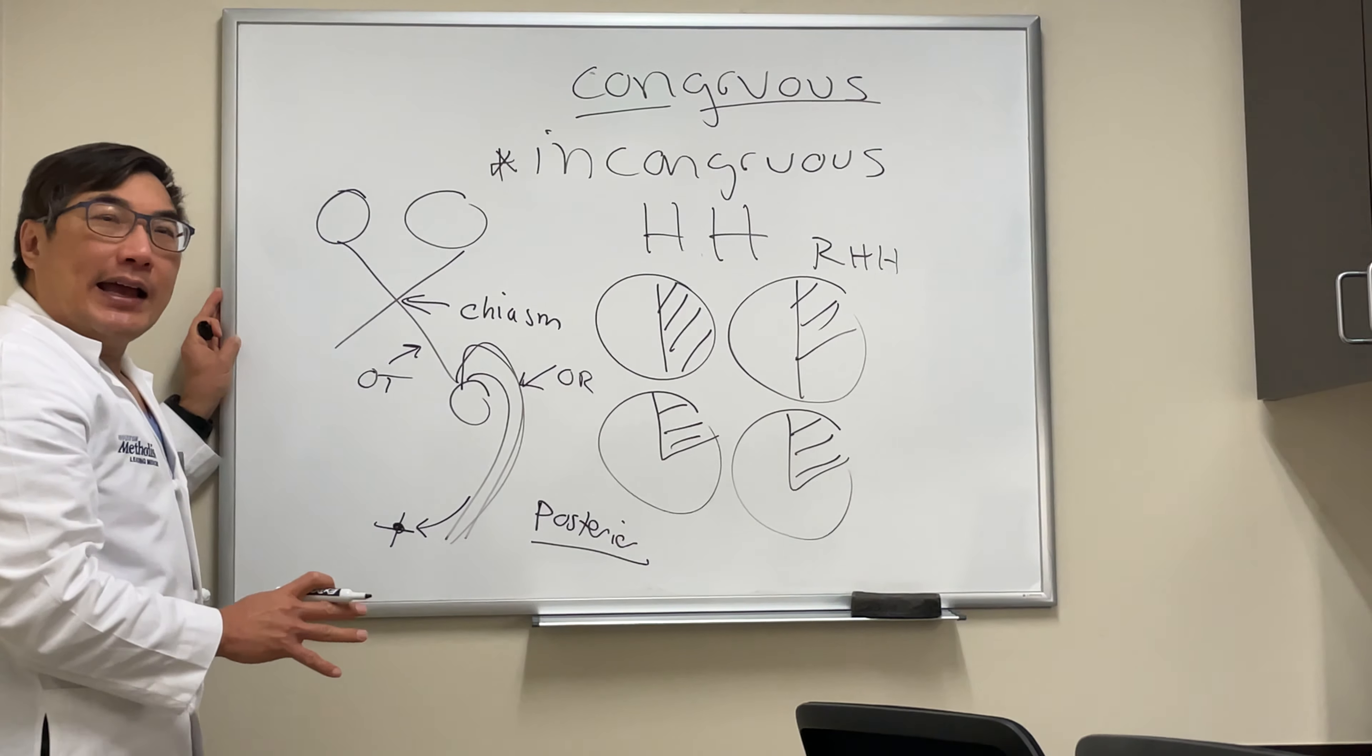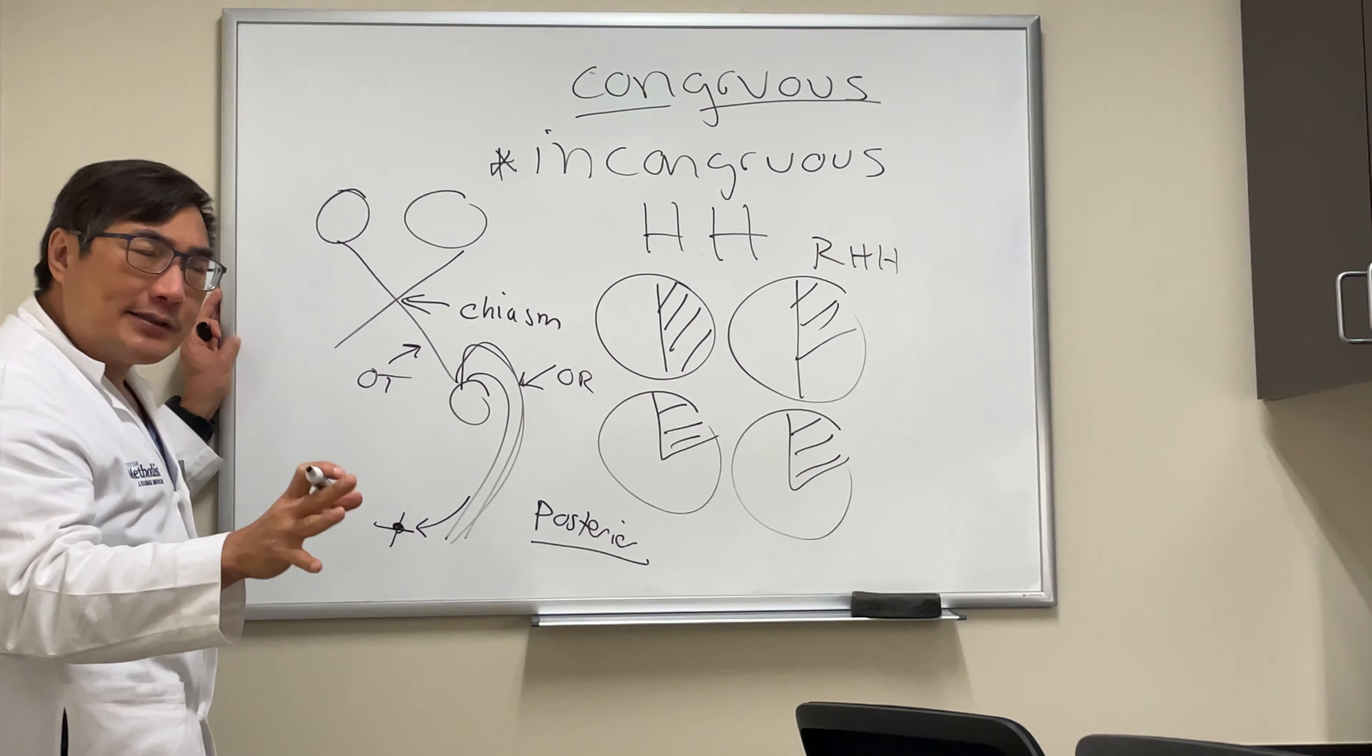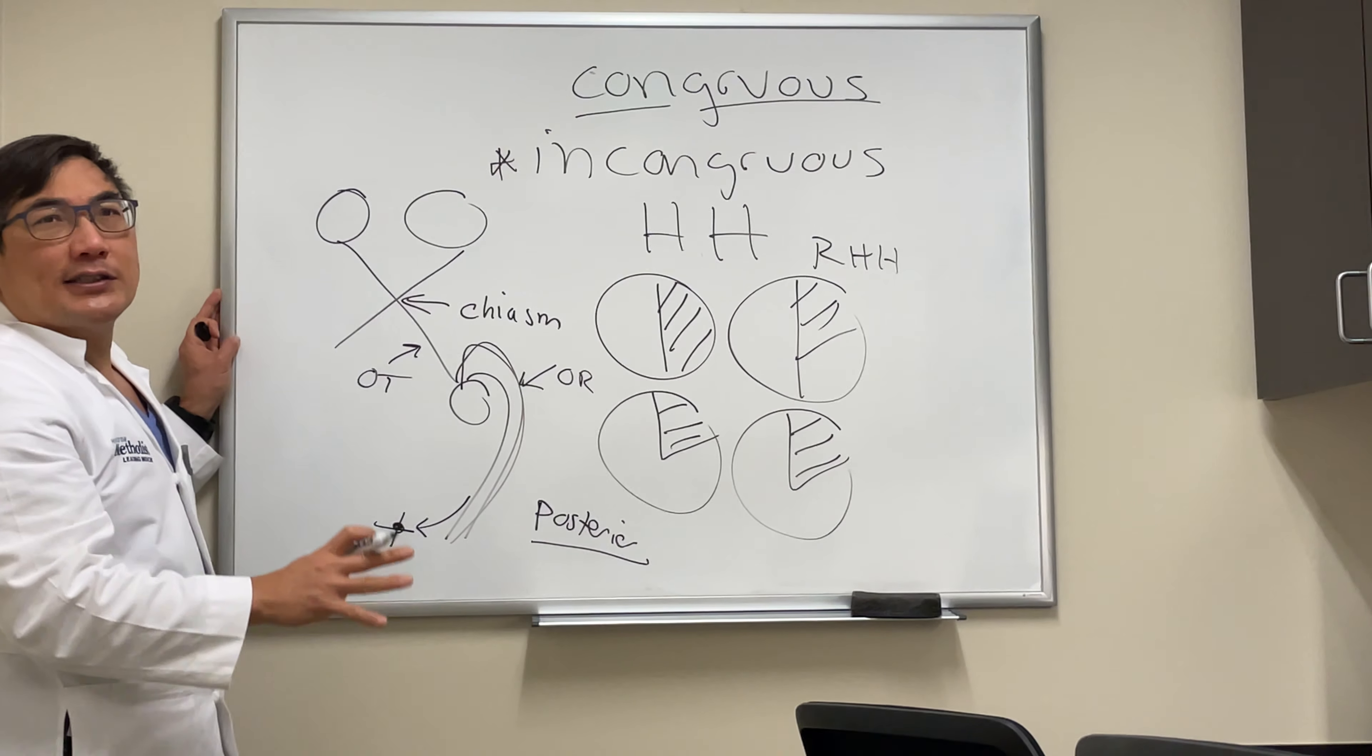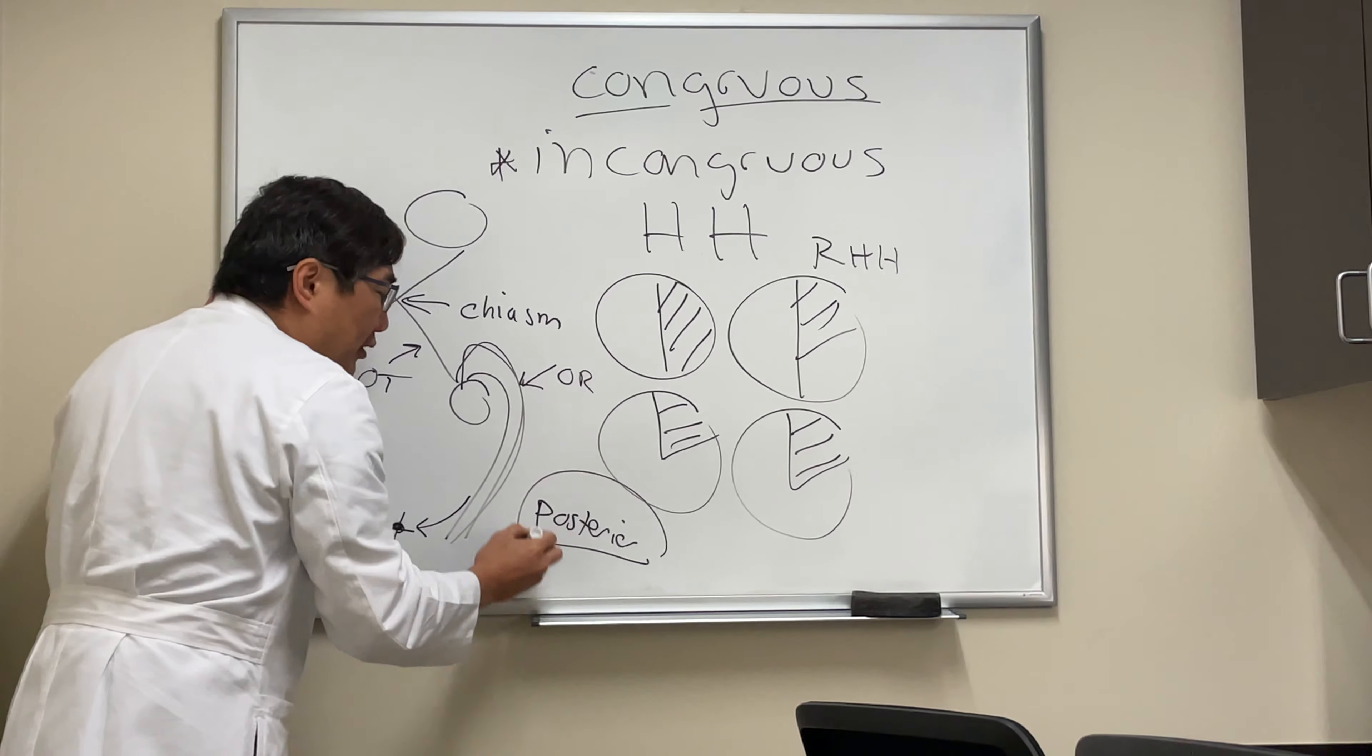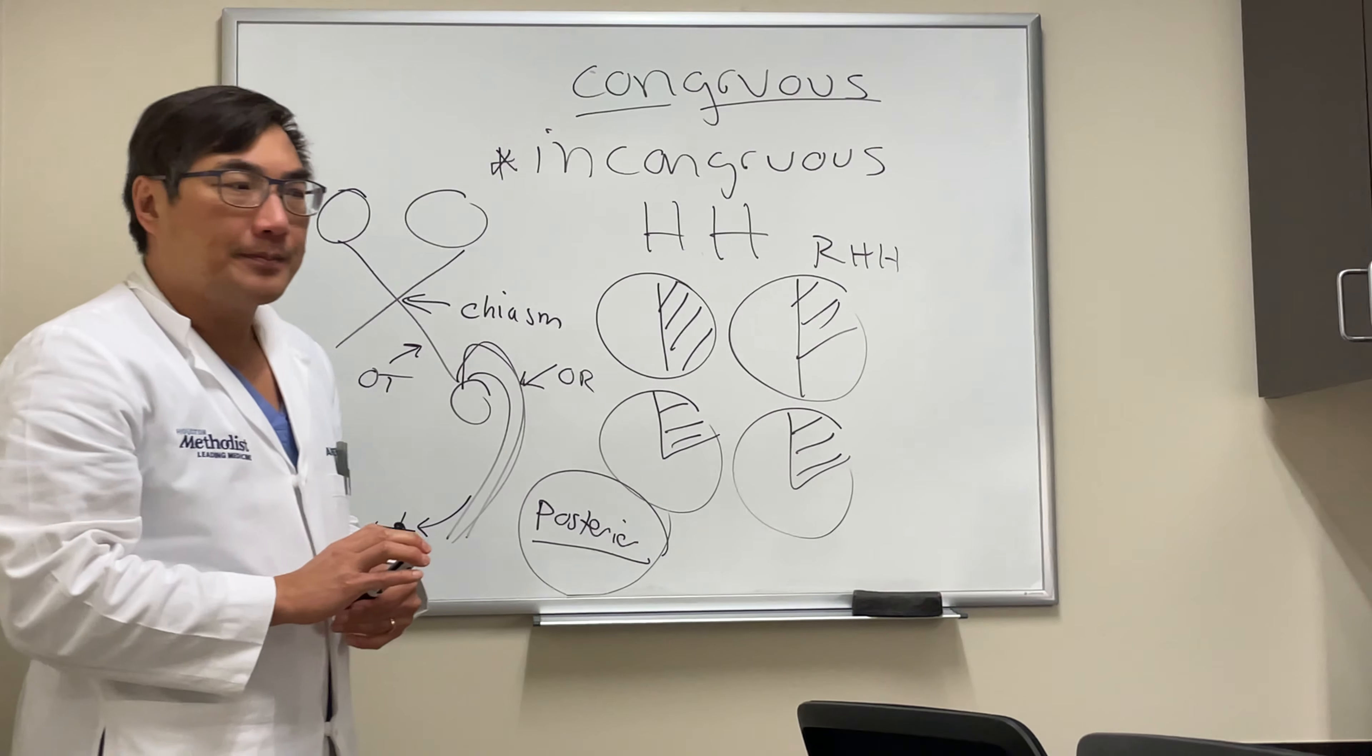When we have a homonymous hemianopsia, for example, here's a right homonymous hemianopsia. If the field defect is not exactly the same between the two eyes, we call that incongruous. You cannot cut this one out and paste it on here and be left with some extra field. That's incongruous.